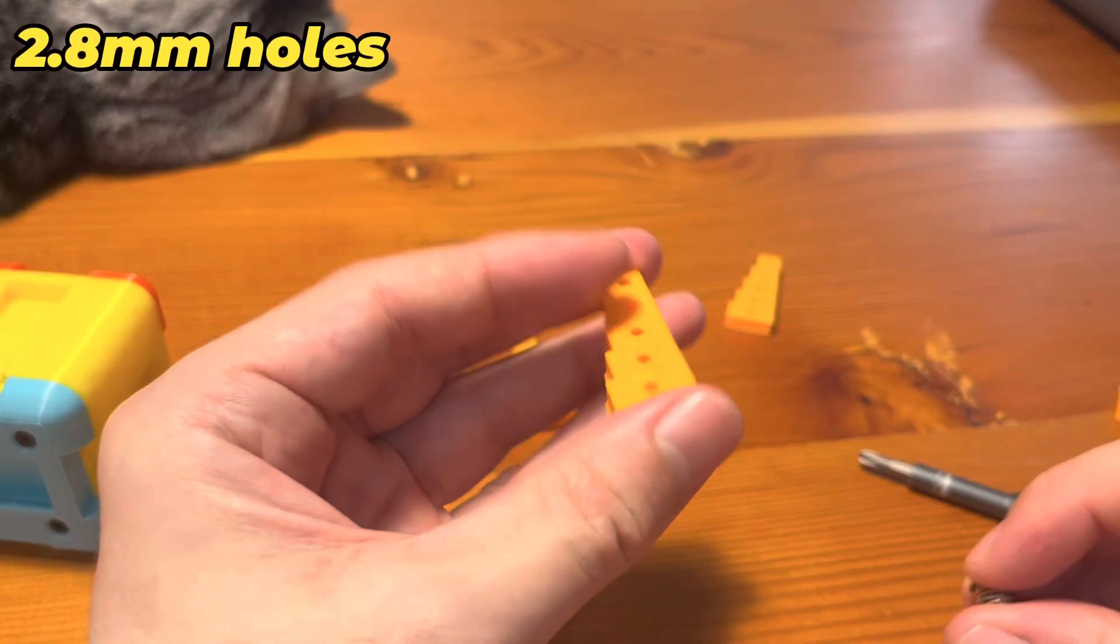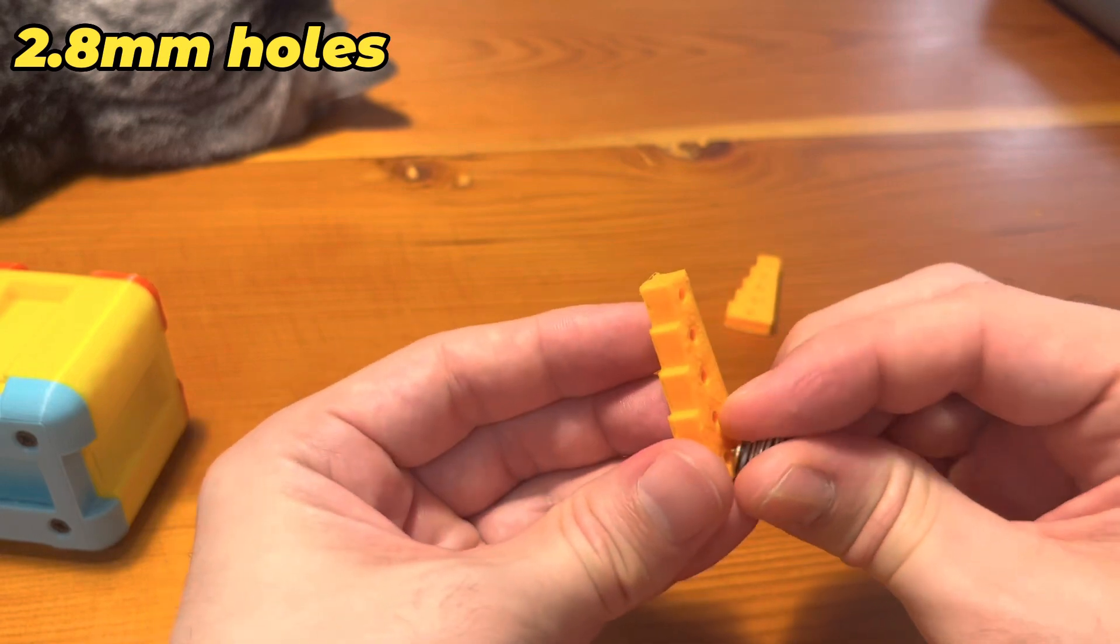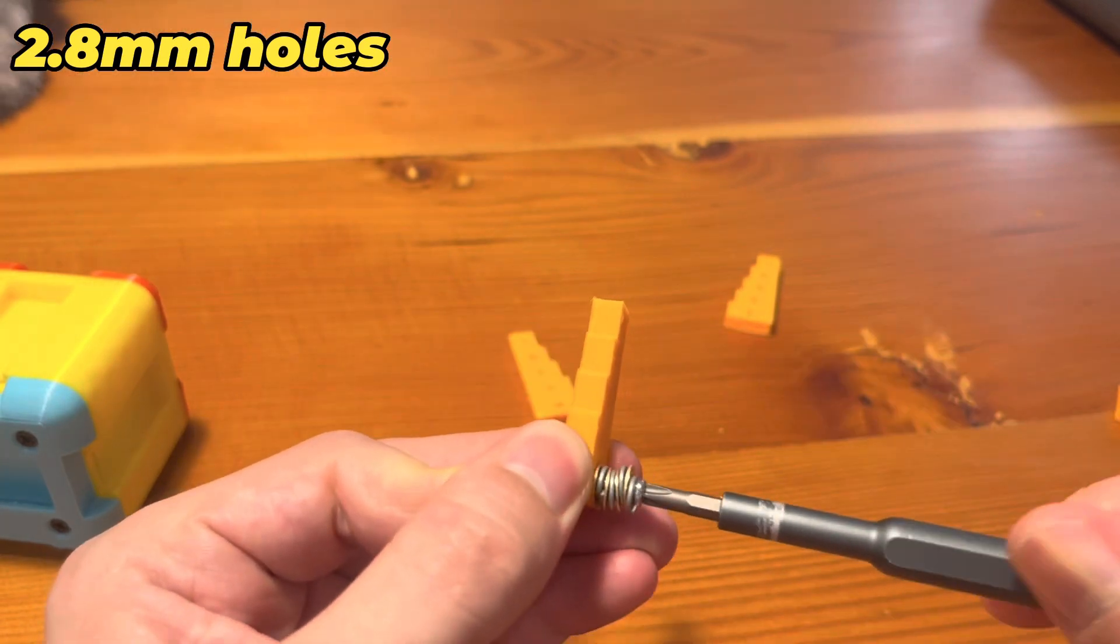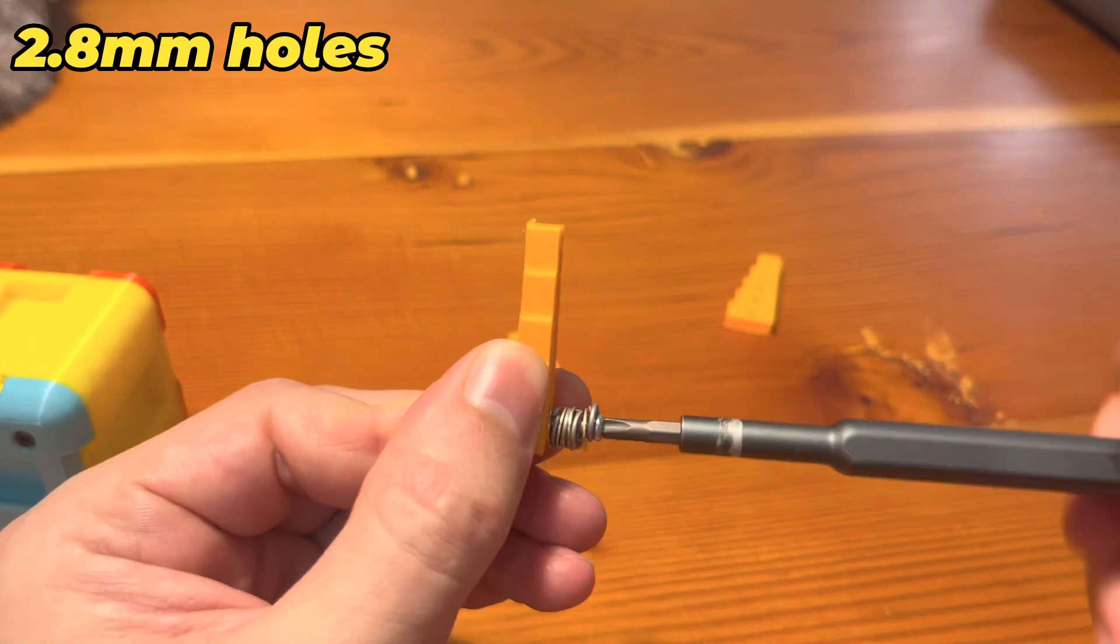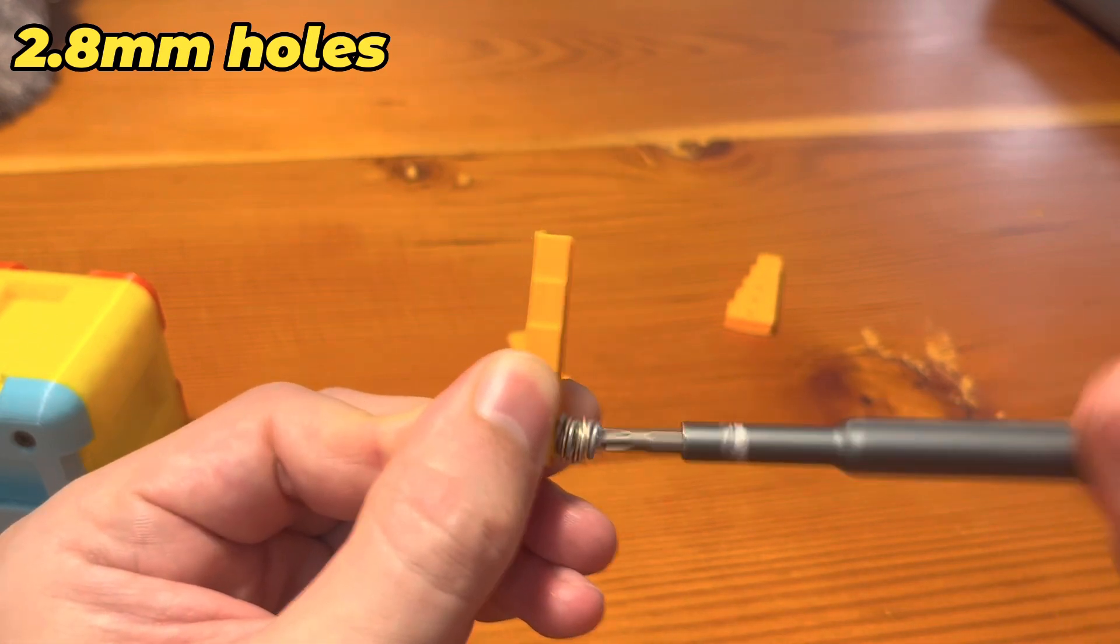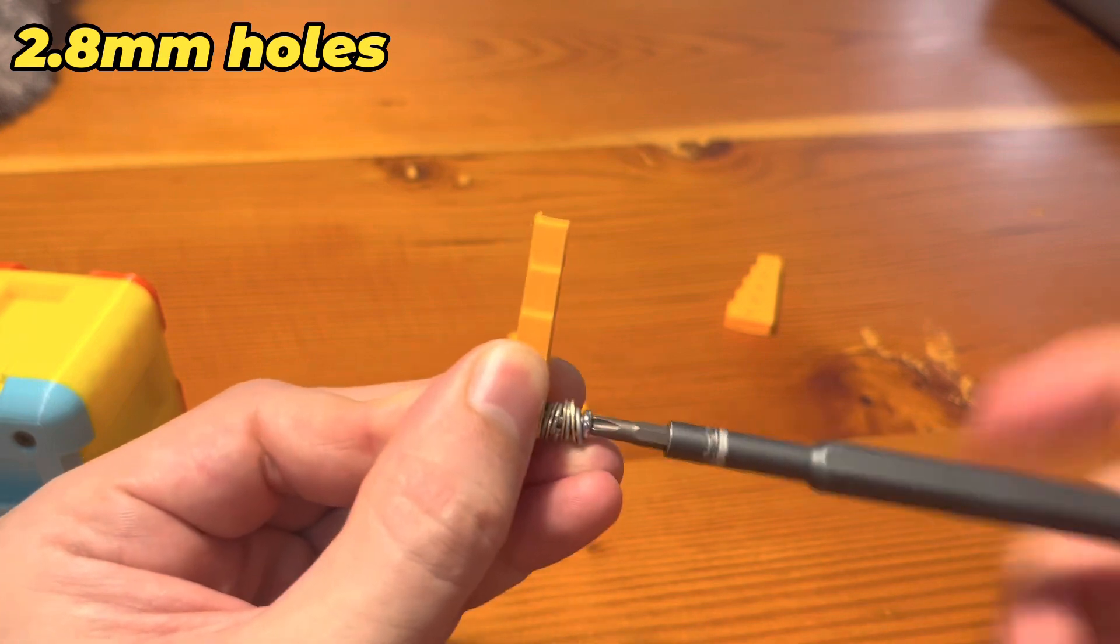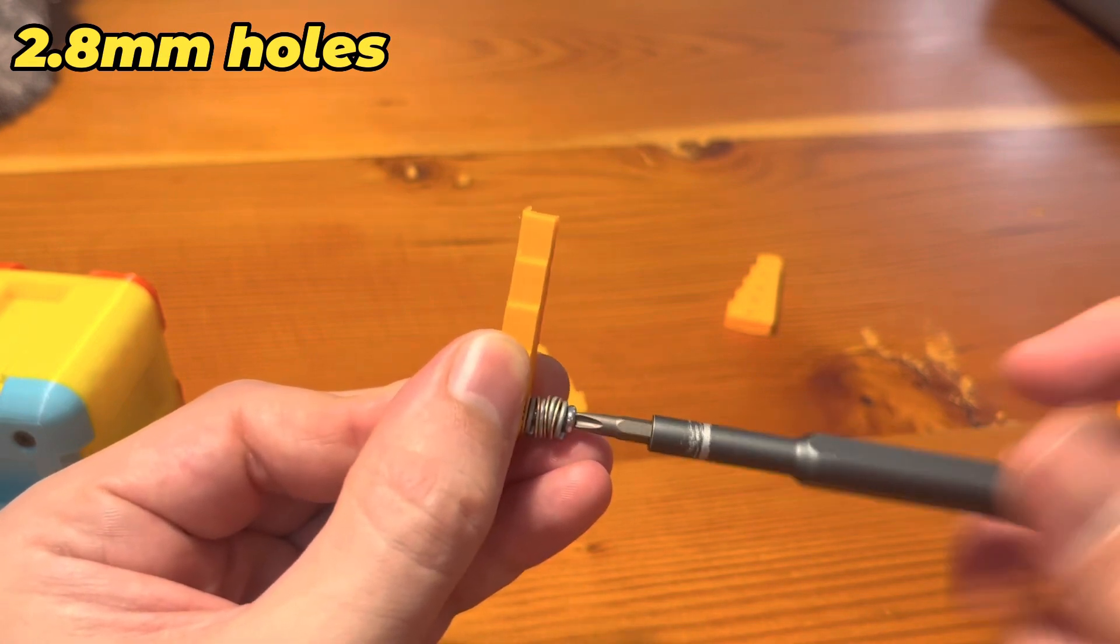Next up, we have the 2.8 millimeter. This one is starting to grab the threads actually. We've got all the washers flattened, fully backed out, and it's stripped. So we got one successful use.